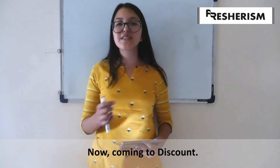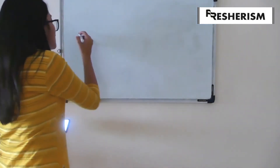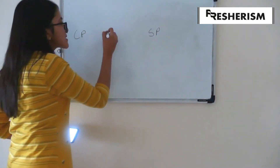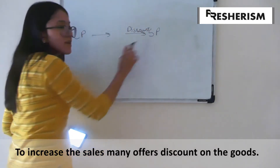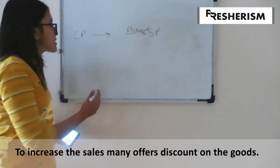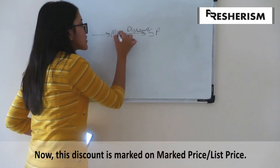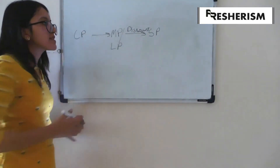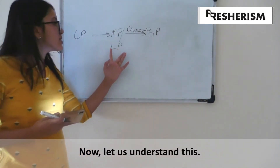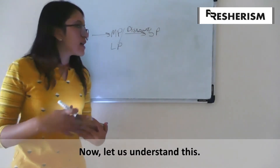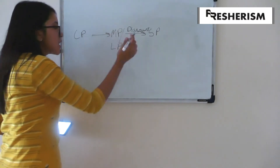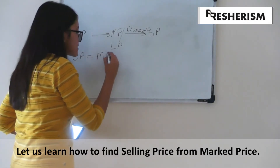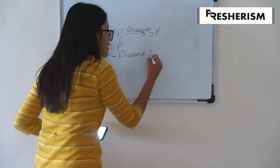Coming to our next topic which is discount. We all remember going from cost price to selling price. Many sellers add a discount to their selling price, and there might be an increase in their sales. They mark this discount on the mark price or the list price. Therefore, in our concept of cost price and selling price, one more thing is added in between which is mark price and list price. To go to selling price from mark price, selling price is equal to mark price minus discount or discount percent.